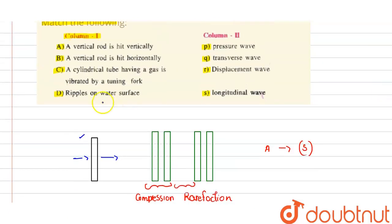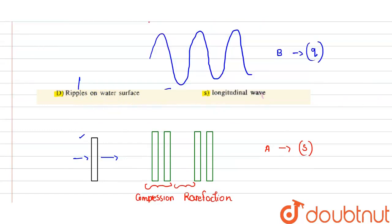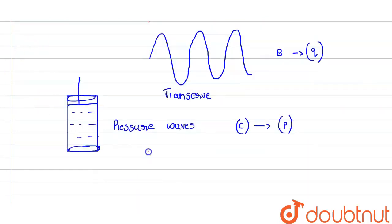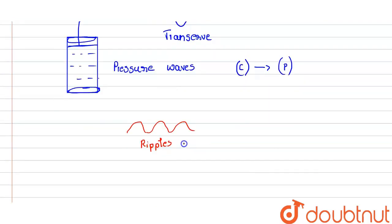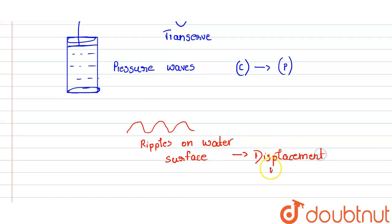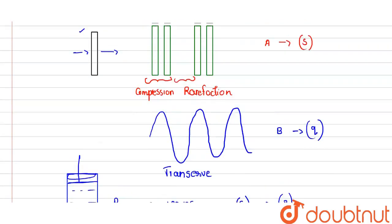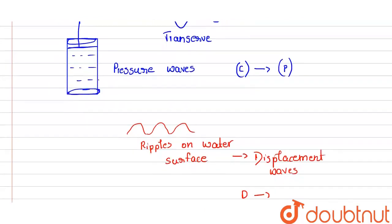In the final option, it is ripples on water surface. When something like a stone is thrown into the water, ripples are formed. The ripples on the water surface represent displacement waves. So, option D corresponds to displacement wave, which is option R in the second column.